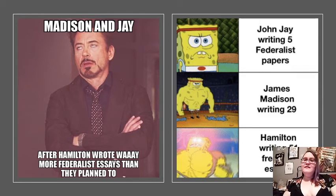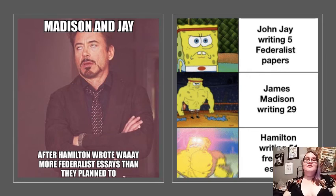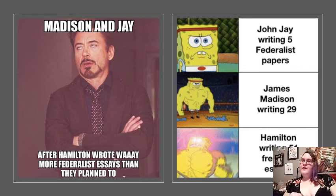And then finally, in Federalist 84, Hamilton talks about his views on adding a Bill of Rights. His argument is that the Constitution already guarantees all of our rights that aren't specifically taken, so he thought a Bill of Rights was actually dangerous and unnecessary because it would place limitations on our rights. So those are the Federalist Papers and a little bit about the Brutus Papers. I'll see you guys next time.